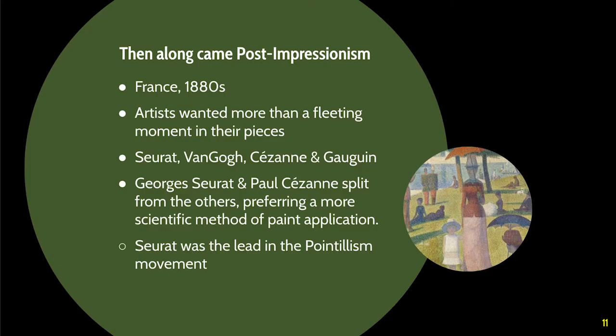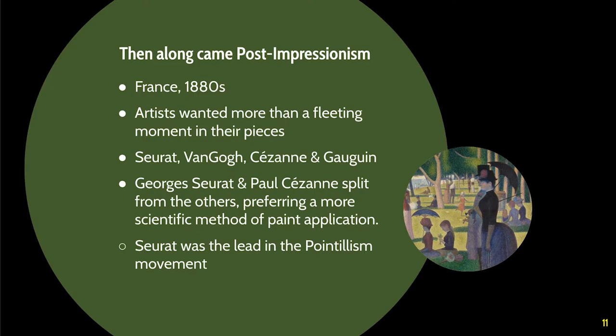Then we have post-impressionism, and this is really what pointillism grew out of — about 20 years later. The artists wanted something more than just that quick impression. Seurat, Van Gogh, Cézanne, and Gauguin created something different. They would often start painting outdoors but take their pieces back into the studio. Seurat and Cézanne split from the others wanting something more scientific, whereas Van Gogh and Gauguin wanted something more emotional.